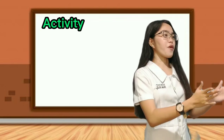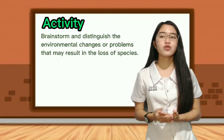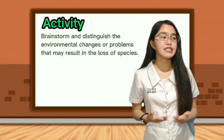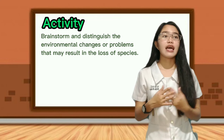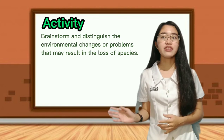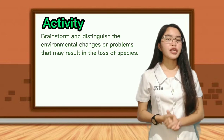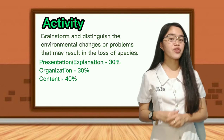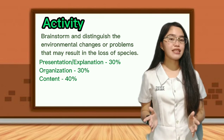So I will group you into four — group one, group two, group three, and group four. Each group will be given time to brainstorm and distinguish the environmental changes or problems that may result in the loss of species. Using a marker, write it down on a cartolina that I will provide, and pick a representative to present your output here in front. You will be graded according to the rubrics: presentation and explanation 30%, organization 30%, and content 40%, for a total of 100%. Your 10 minutes starts now!